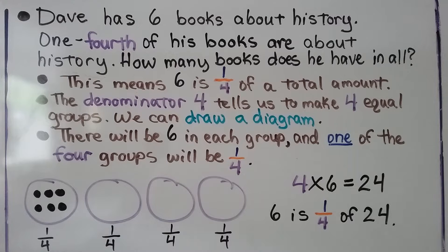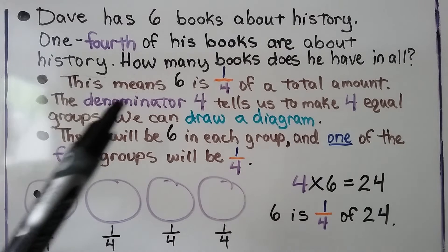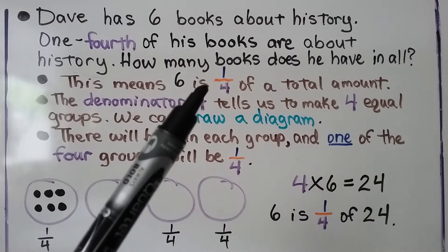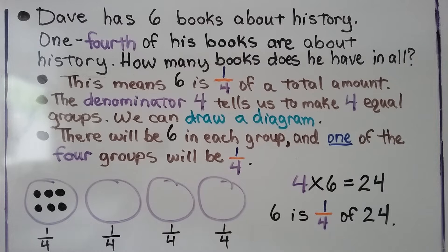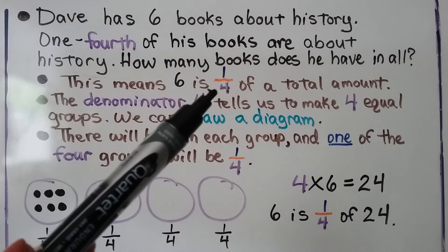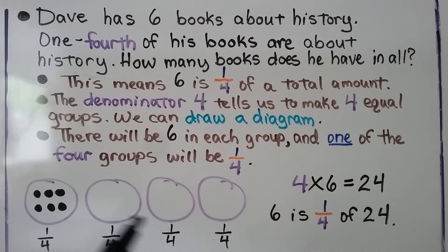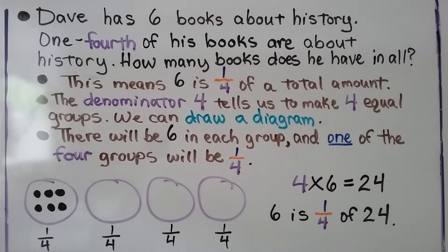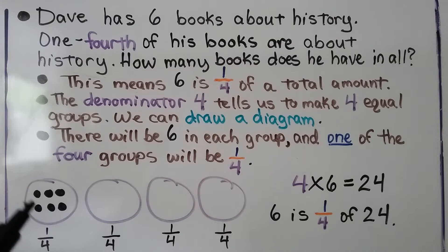Dave has 6 books about history. One-fourth of his books are about history. So, how many books does he have in all? We see this one-fourth — this means 6 is one-fourth of the total amount. The denominator 4 tells us to make 4 equal groups. So we can draw a diagram of 4 equal groups, and there's going to be 6 in each group, and 1 of the 4 groups will be one-fourth.